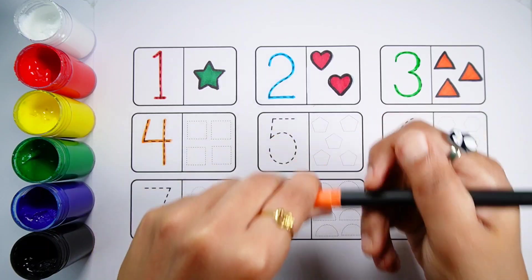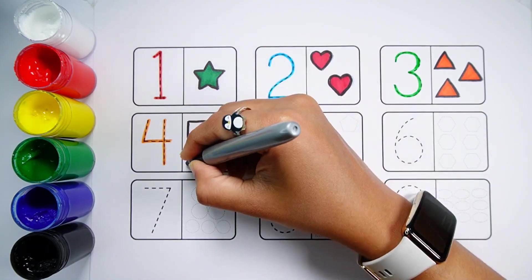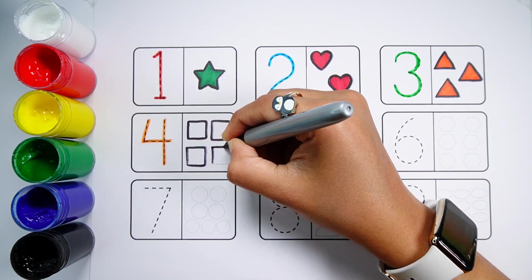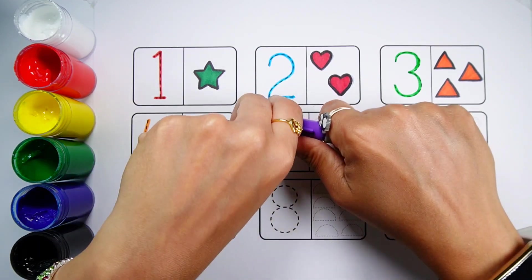Number 4. One Two Three Four. Four Squares. Violet Color.